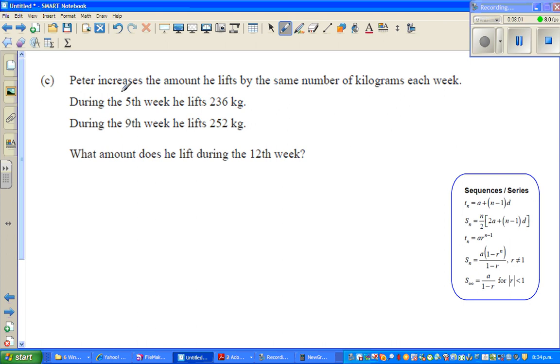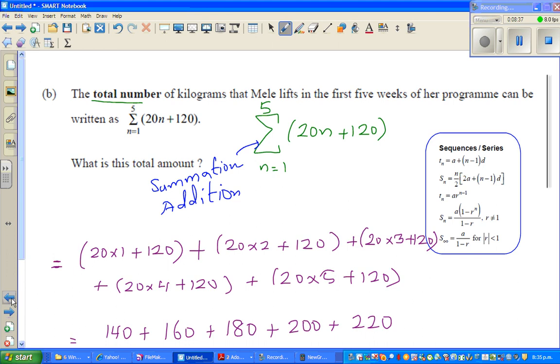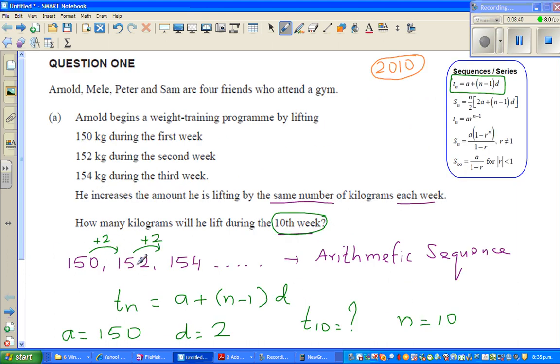Let me move on to the next question. Peter increases the amount he lifts by the same number of kilograms each week. This is also giving me the hint this is an arithmetic sequence. During the fifth week he lifts 236 kg, so t5 is 236. And in the ninth week he is lifting 252 kg, so t9 is 252.